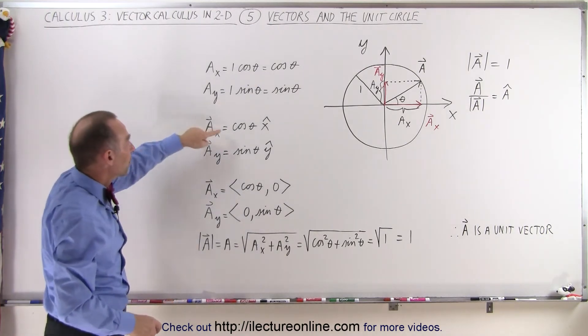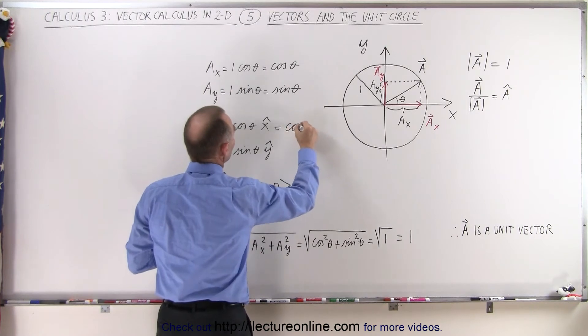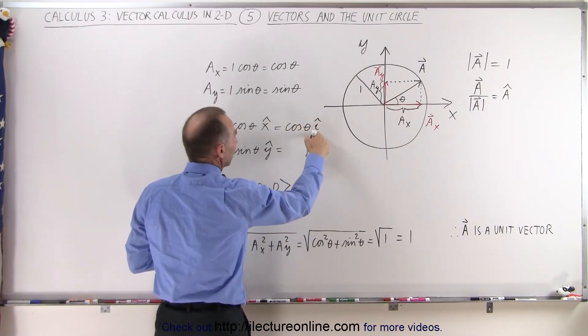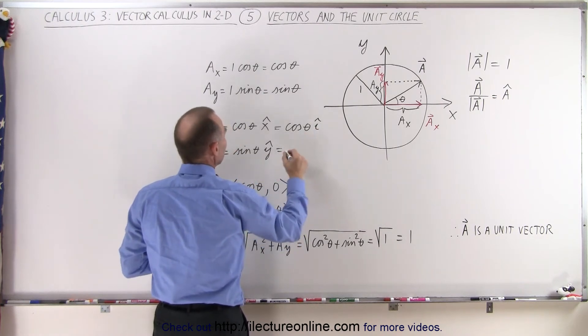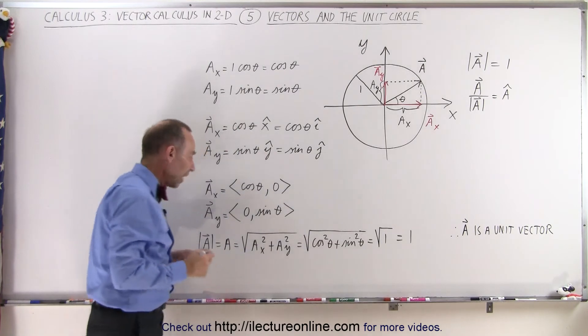So the x component can be represented like this, or if you like this better, you can say that's equal to the cosine of theta in the x direction, or multiply times the i unit vector. And here that would be the sine of theta multiplied by the j unit vector.